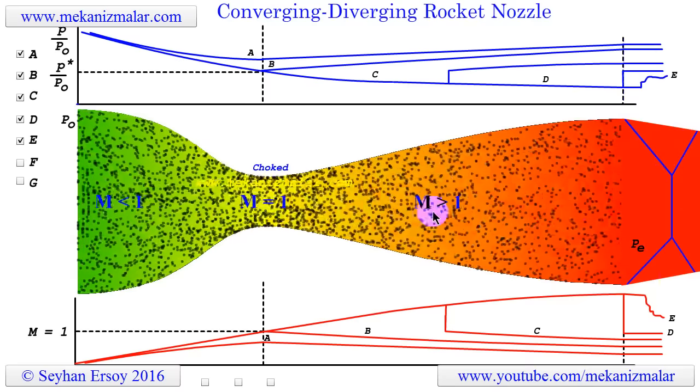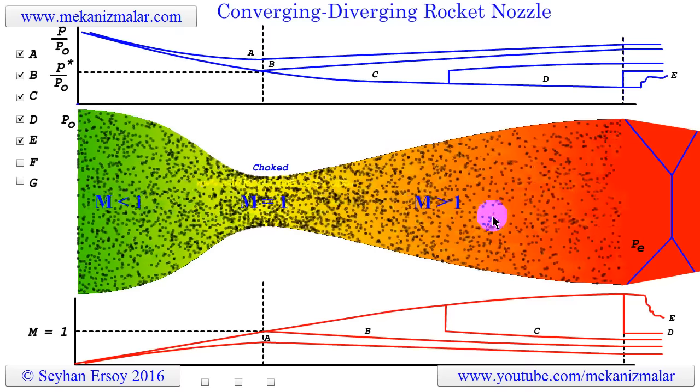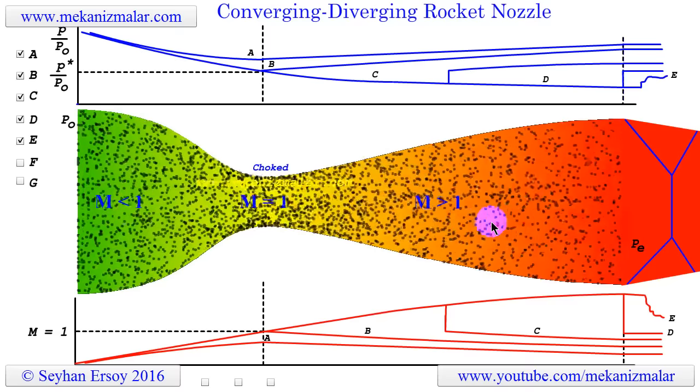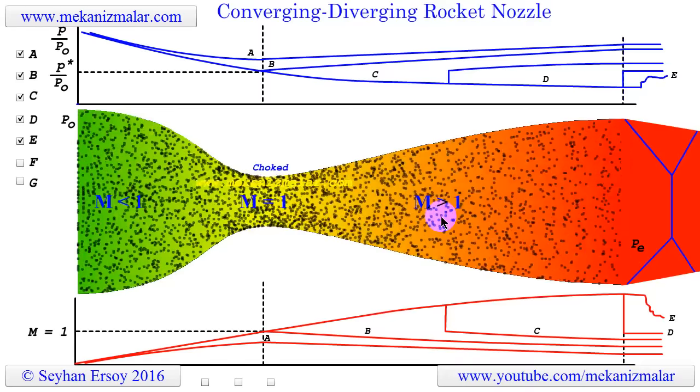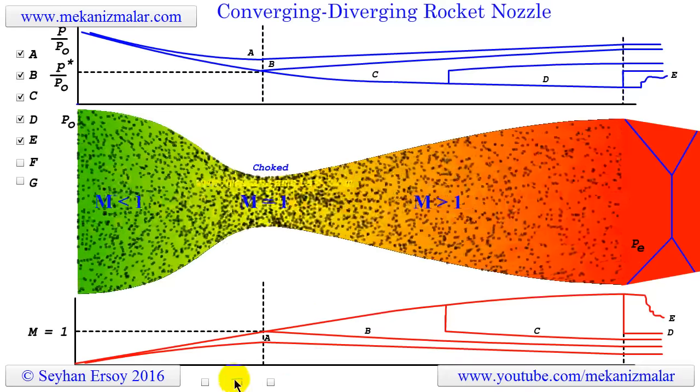During this operation, the nozzle is inefficient, but usually the rocket engines are designed in this mode. This interesting flow pattern can be seen in the following figure.